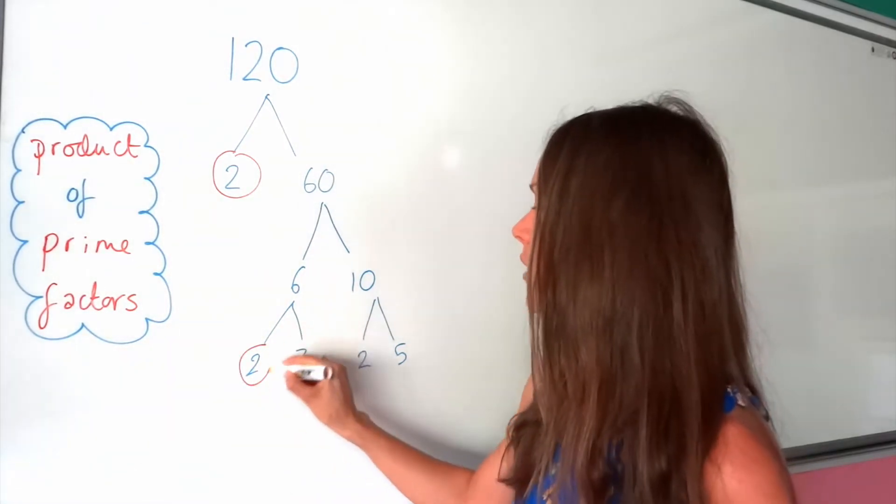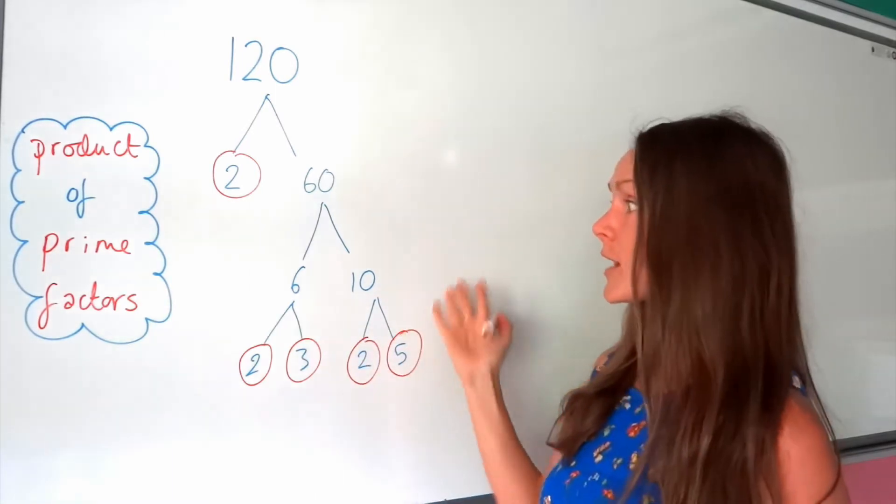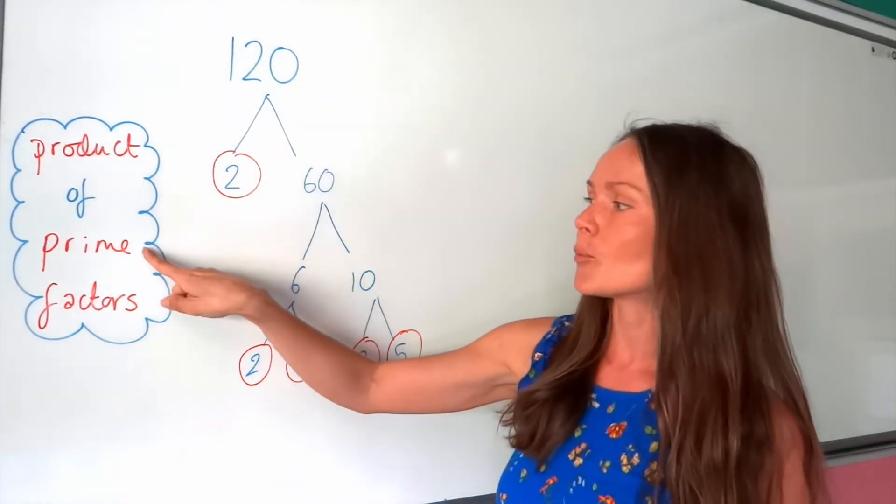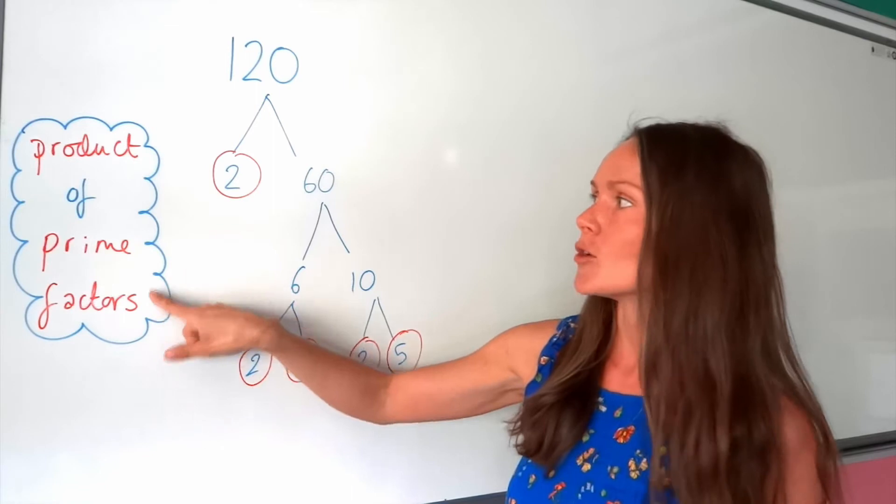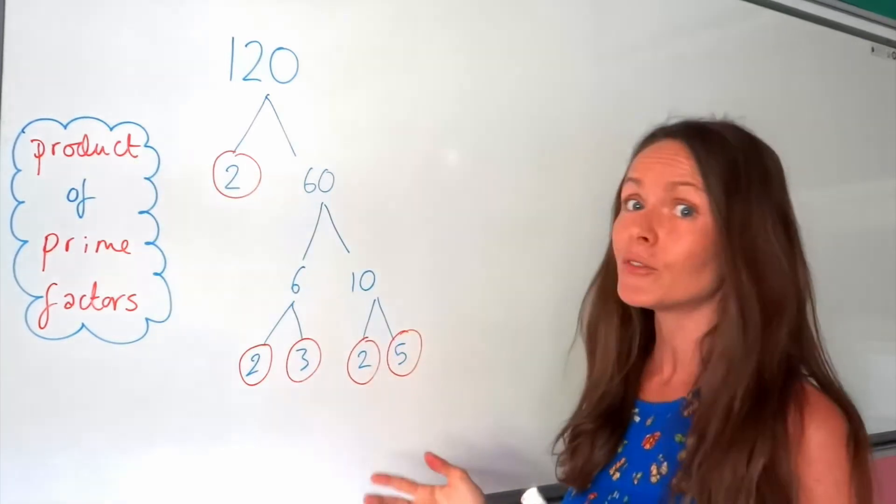So all of those are prime, so I'm going to circle them, and so our factor tree is finished. So now, the last step, remember, after you've found your prime factors, you need to write them as a product. So we need to multiply them together. So we haven't finished yet.